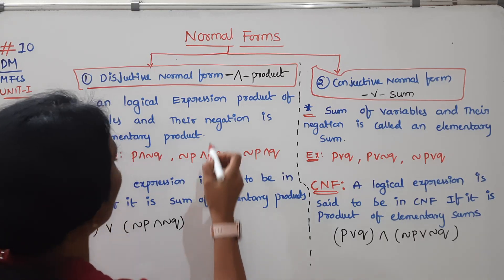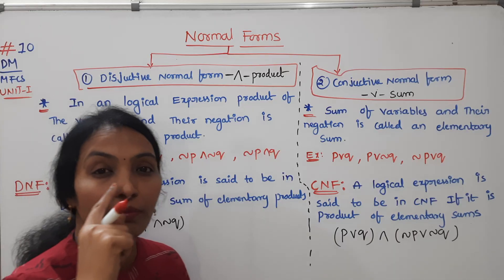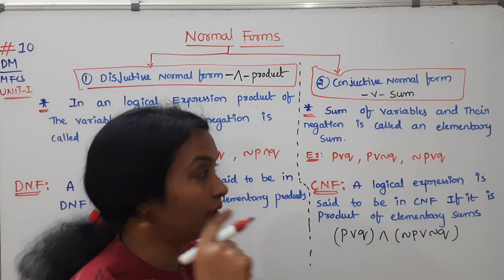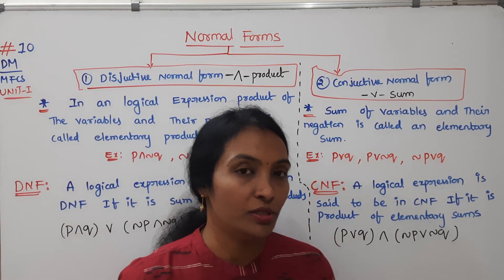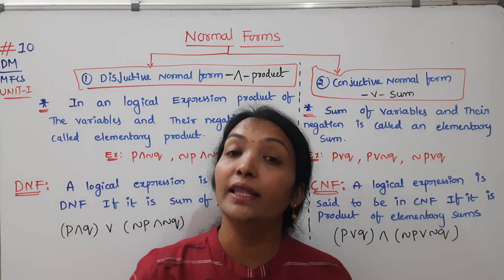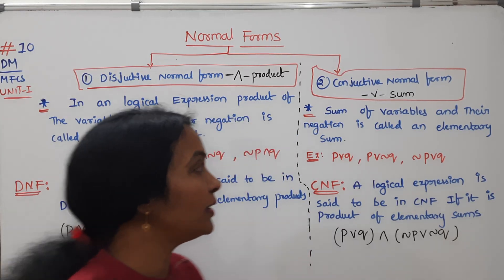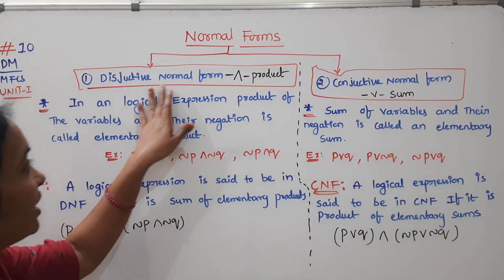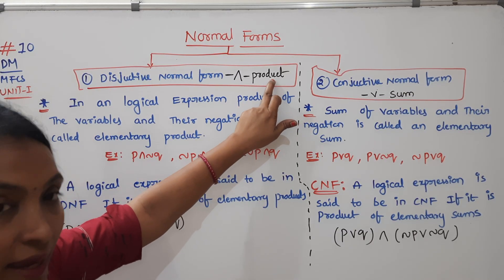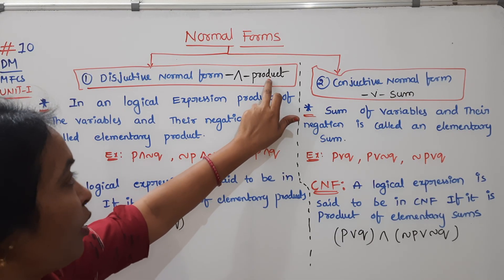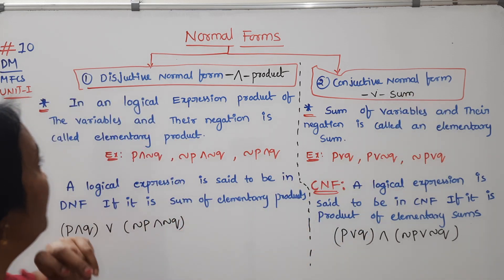The disjunctive symbol is the 'sum' symbol, and the conjunctive symbol is the 'product' symbol. The AND symbol indicates the product — that is the elementary product. The OR symbol indicates the elementary sum.